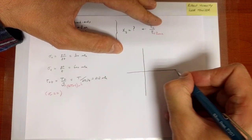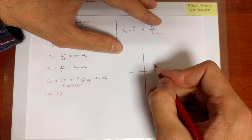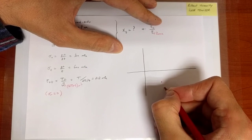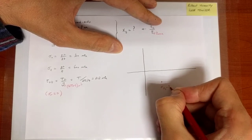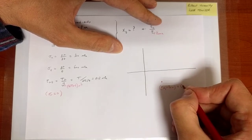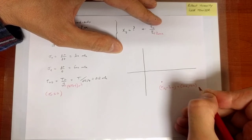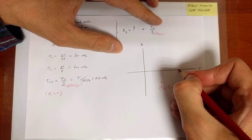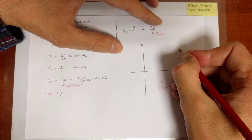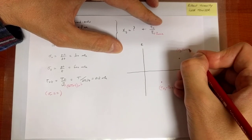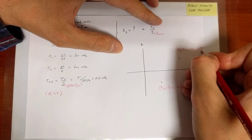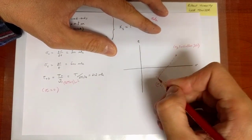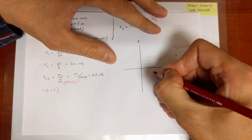I need to draw Mohr's circle. We have one point which is sigma_x at 300, so this point is at (300, −212) — that's our convention for point x with minus tau_xt. Everything is in MPa. The other point is at (600, +212) MPa. I draw the circle using those two points as the diameter.